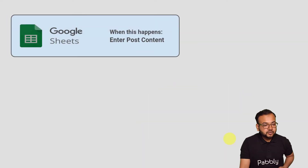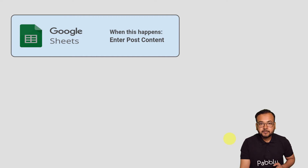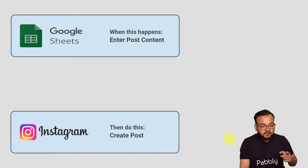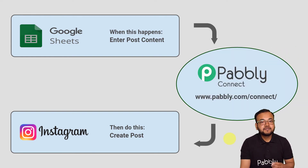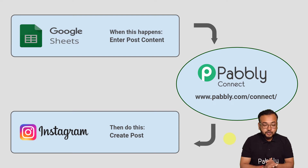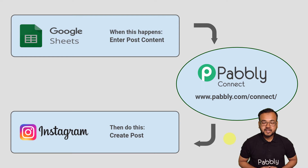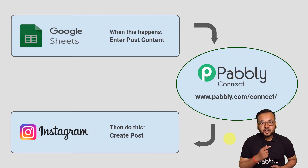This is how it is going to work: as and when you enter the post content in the spreadsheet you have created in Google Sheets, the same content will be created as a new post in Instagram automatically. To make this happen we are using Pabbly Connect, which is an integration and automation tool, and the best part is that you will not require any coding skills or programming knowledge. Now let's set up this automation together.